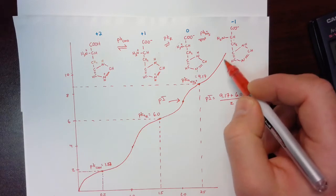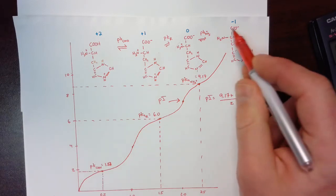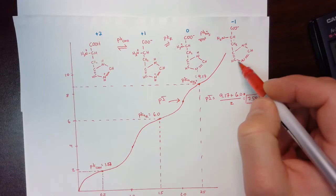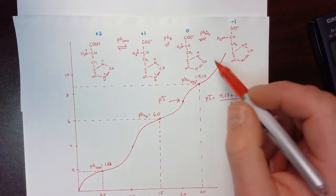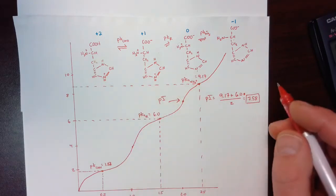So we could continue to add base all the way until we get to a point where, effectively speaking, practically speaking, this is the only thing that's existing in the solution with very small amounts of each of these there.